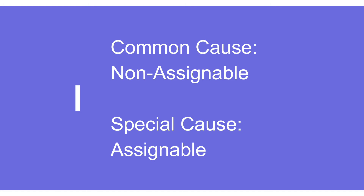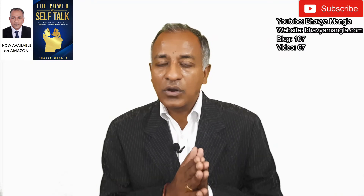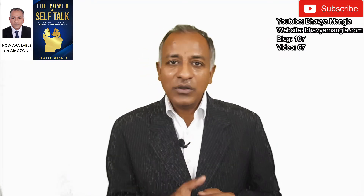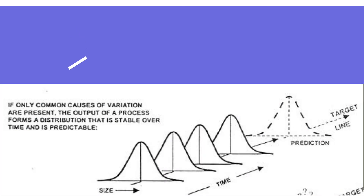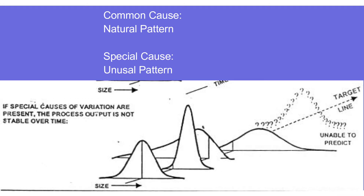Common cause is also called a non-assignable cause, and special cause is also called an assignable cause. Common causes represent a natural pattern — the variation that forms naturally within the process. Special cause, on the other hand, is an unnatural pattern — we don't know where the process is going; sometimes it is correct, sometimes it is not.